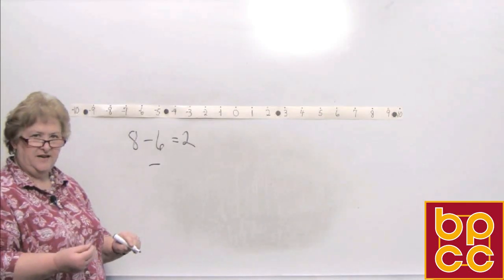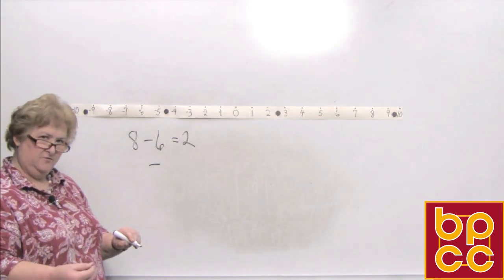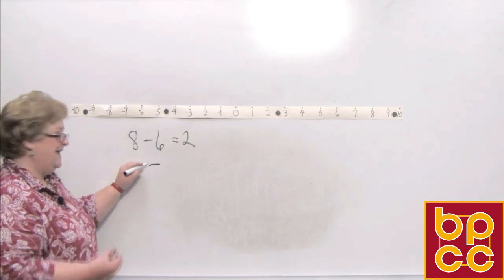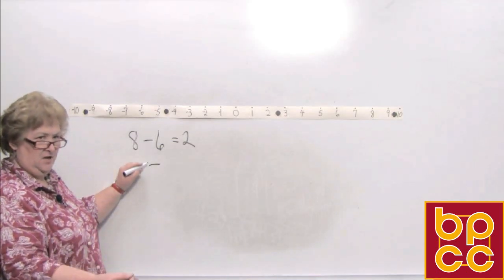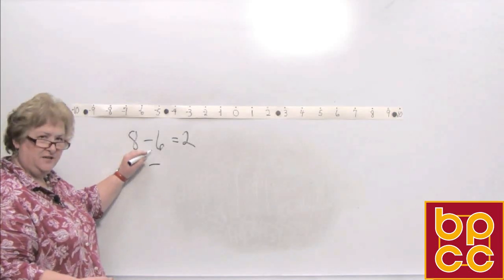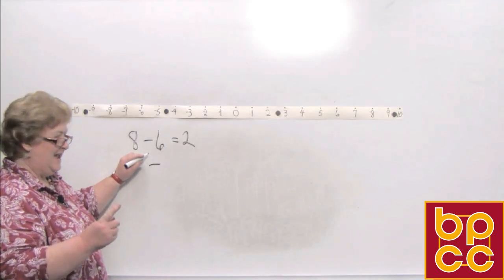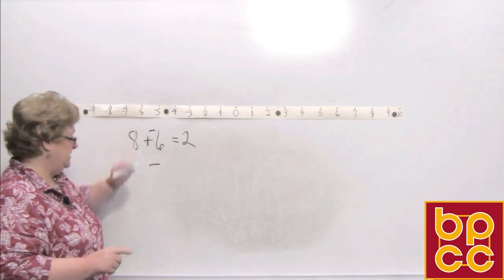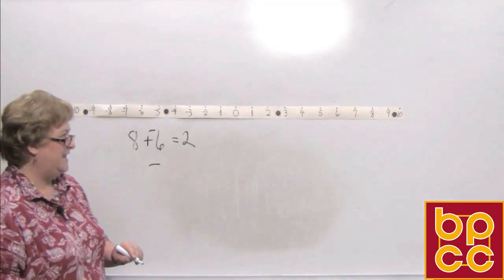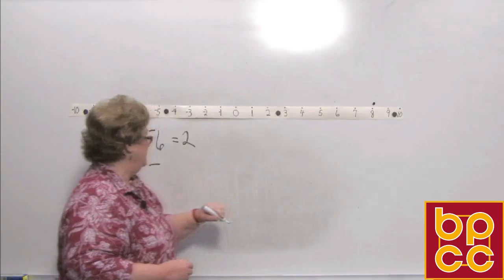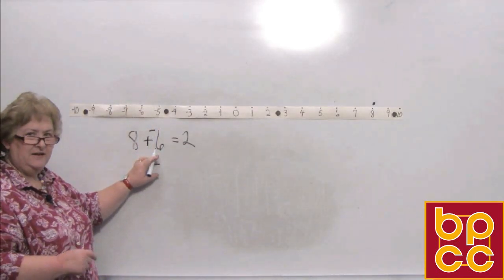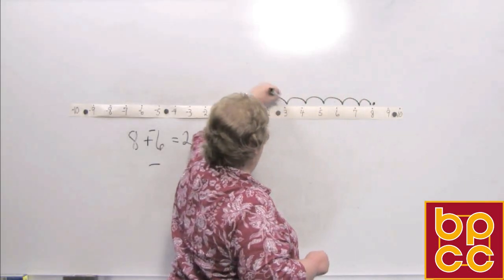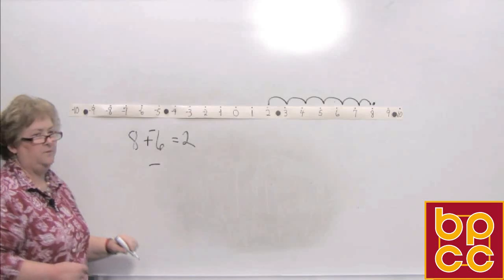Remember, this sign says 'the opposite of.' In this particular case, it means to add the opposite of. So if I have 8 minus 6, it really means add the opposite — the opposite of that positive 6 is a negative 6. So I'm going to go to 8 on the number line and add 6 in the negative direction: 1, 2, 3, 4, 5, 6. And we still end up with a positive 2.